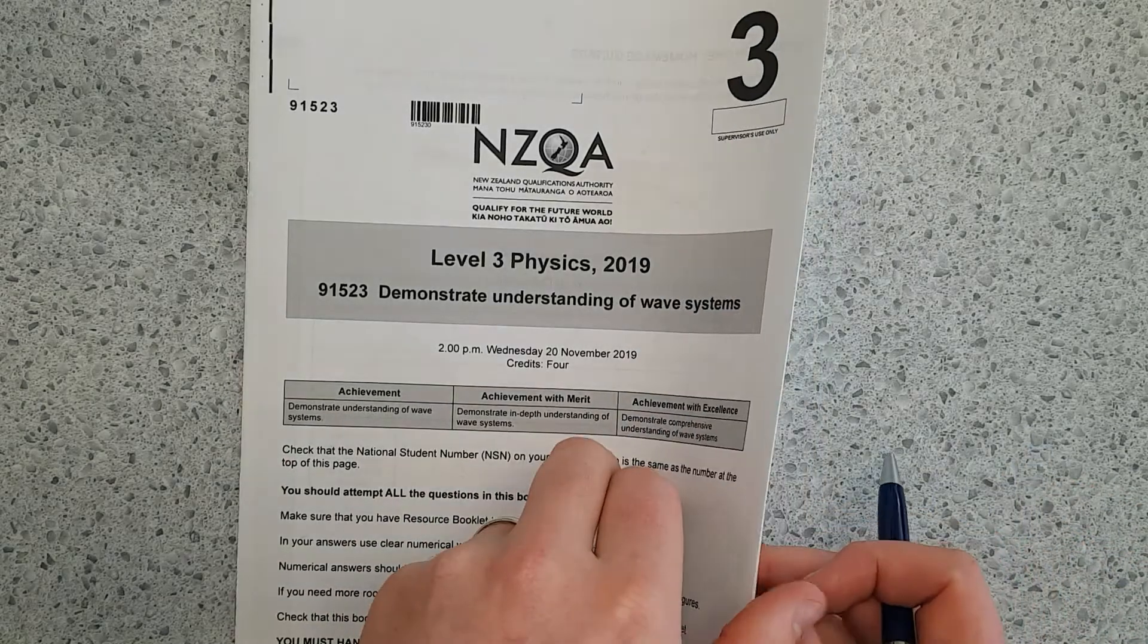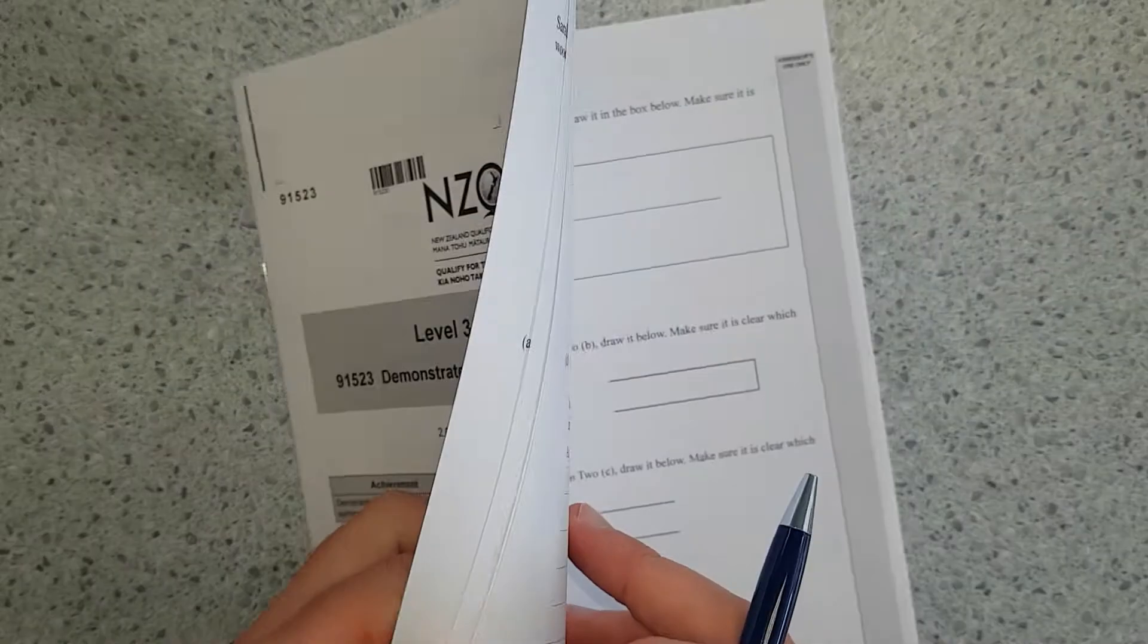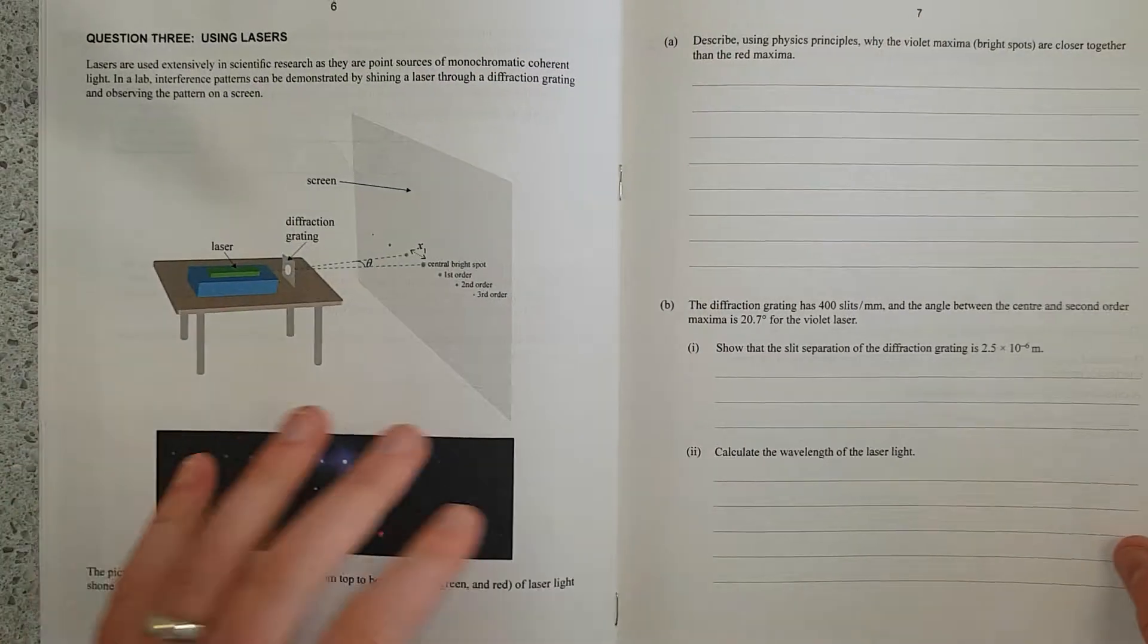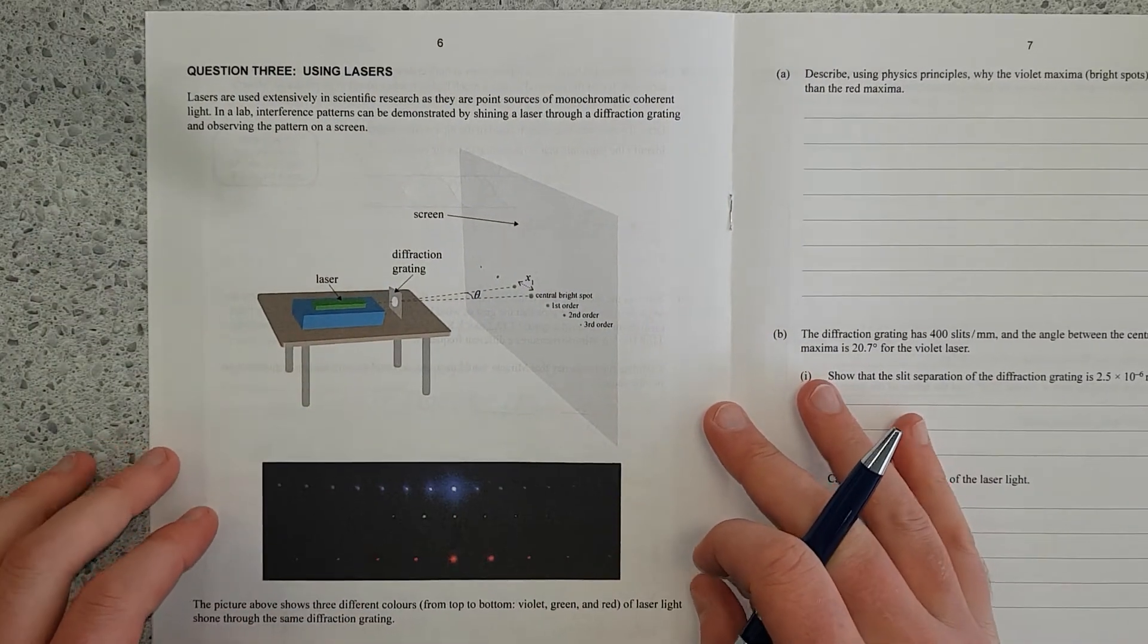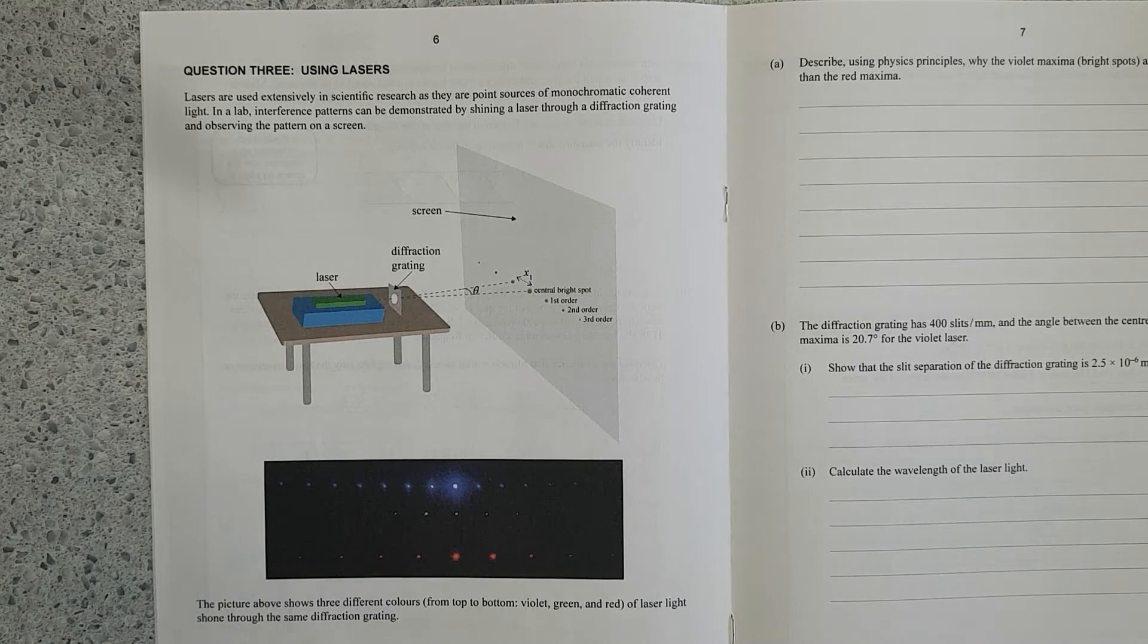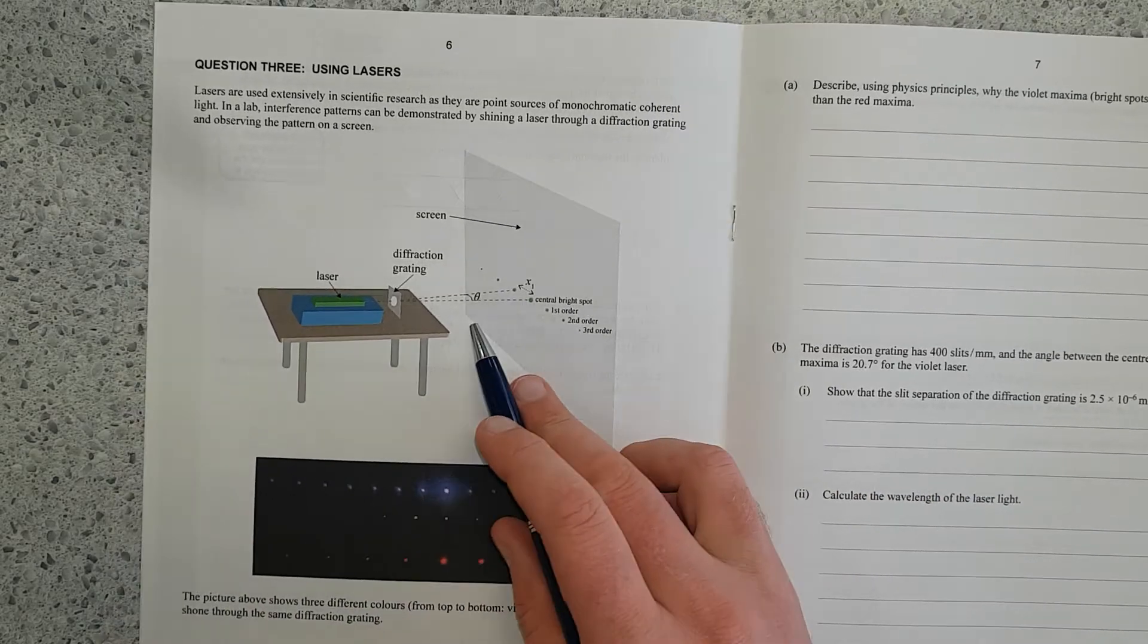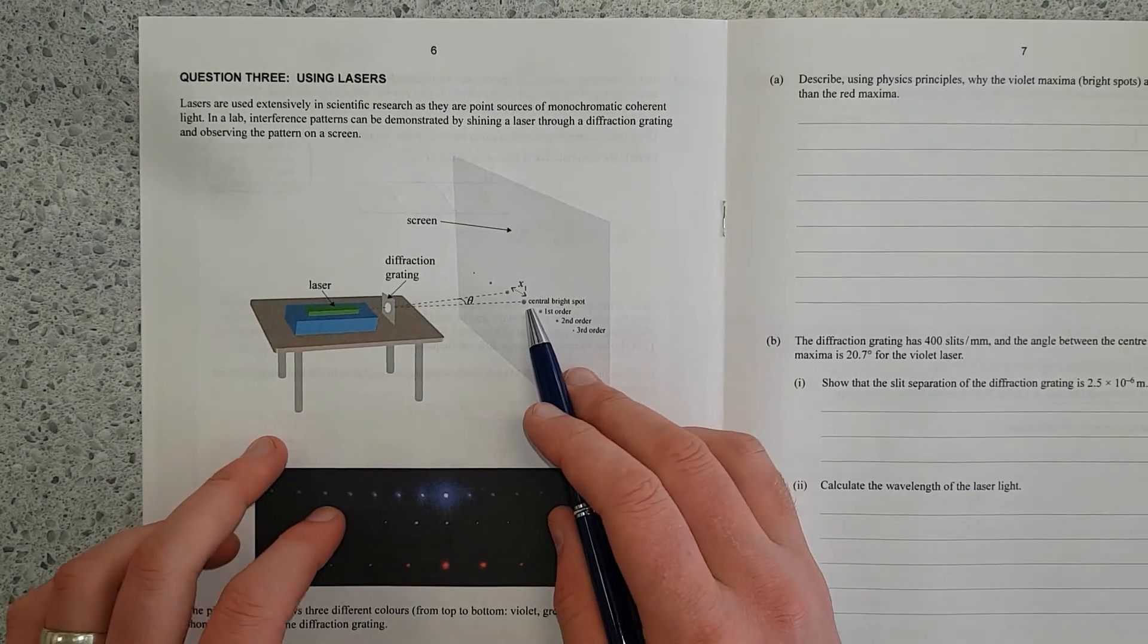This video is the 2019 Level 3 Waves exam, question 3. We've got lasers are used extensively in scientific research as they are point sources of monochromatic coherent light. In a lab, interference patterns can be demonstrated by shining laser through diffraction grading and observing the pattern on the screen. So we've got laser, it's a green laser, hopefully you can sort of see that.